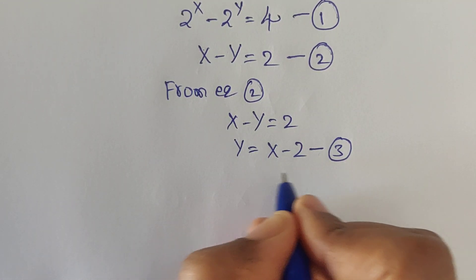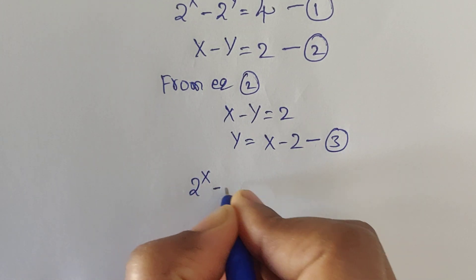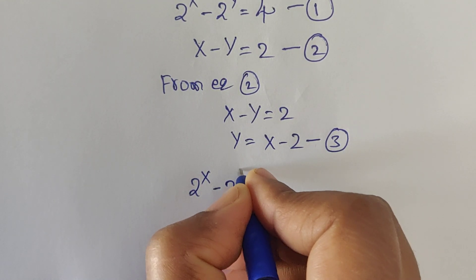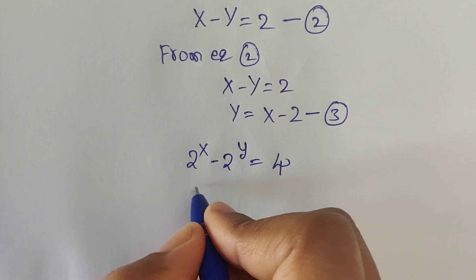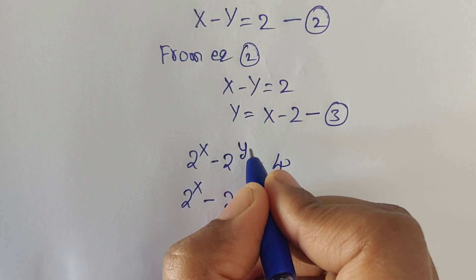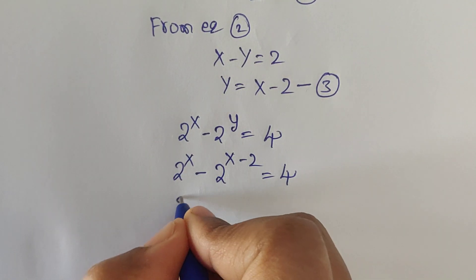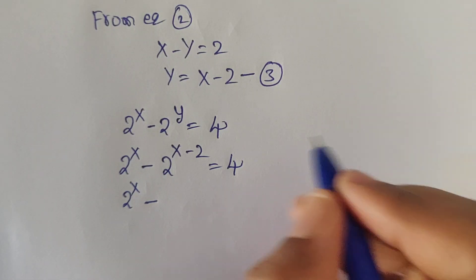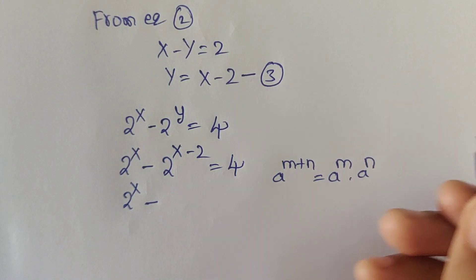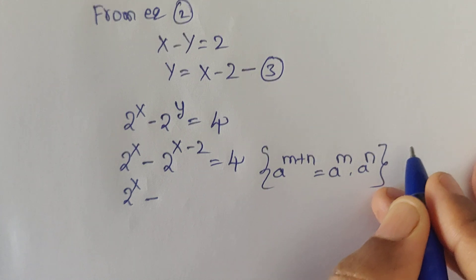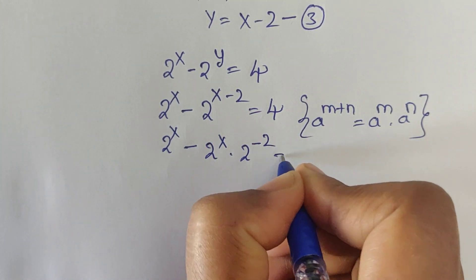Now just substitute the value of y into the first equation. So 2^x minus 2^(x minus 2) equals 4. Here we can apply the formula: a^(m+n) equals a^m times a^n. Using this formula, we can write 2^x times 2^(−2) equals 4.